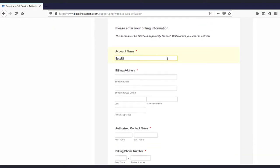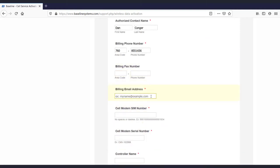On the activation form, you'll need to input the account name, billing address, contact name, billing phone number, and billing email address. Remember that information card? It has the information we'll need: the cell modem SIM number and the cell modem serial number.